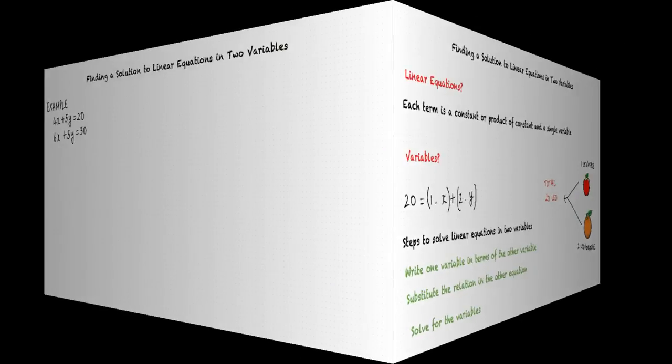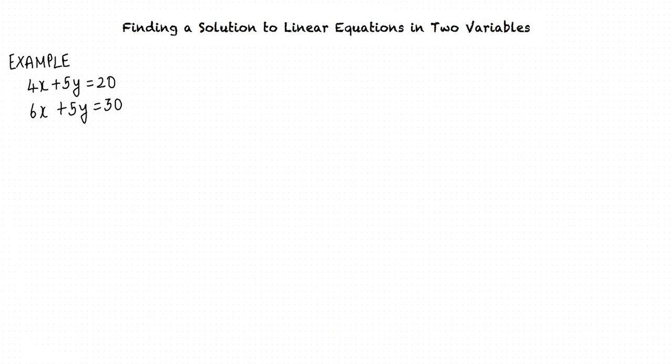Let us consider an example. Let us say we are required to solve the two equations 4x + 5y = 20 and 6x + 5y = 30. The first step is to write one variable in terms of the other variable. Let us consider the equation 4x + 5y = 20.